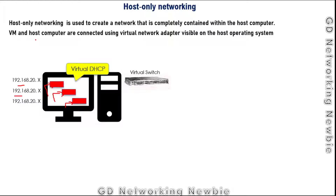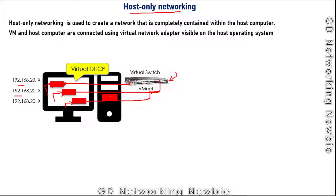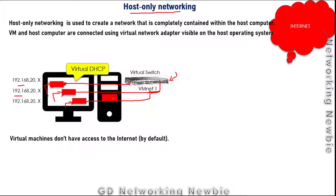To implement this, we have a virtual switch provided by VMware virtualization software. By default, there is already a switch called VMnet1, which provides host-only networking. The virtual adapters from the virtual machines are connected to this switch, and the host network adapter is also connected to this same virtual switch.